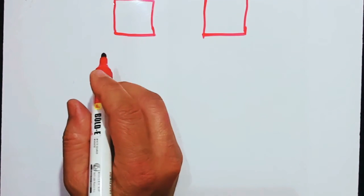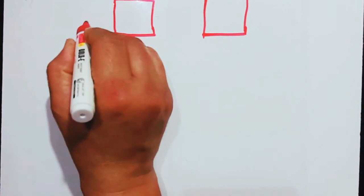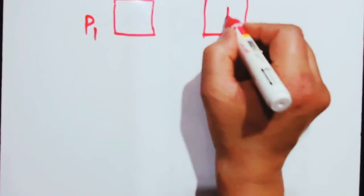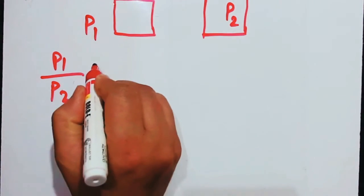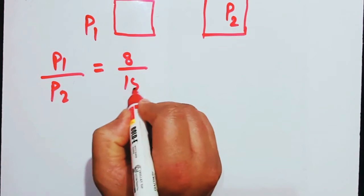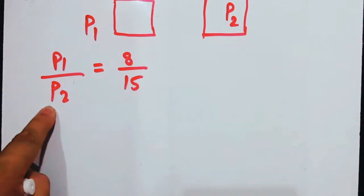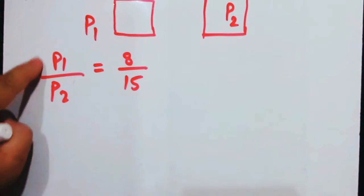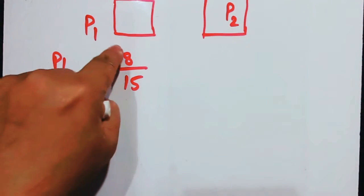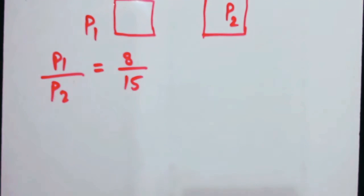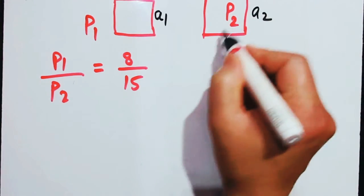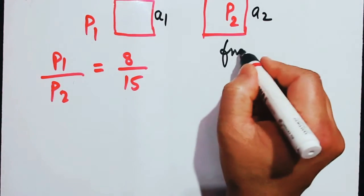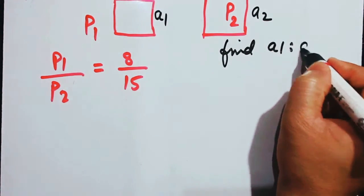If the perimeter of square one is P1 and square two is P2, they say P1 by P2 equals 8 by 15. They ask us to find the ratio of their sides, that is A1 is to A2.